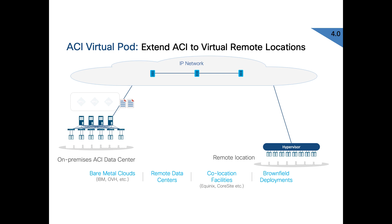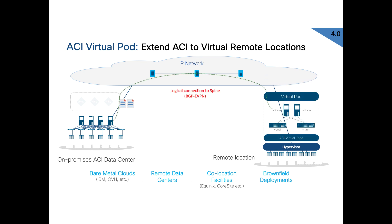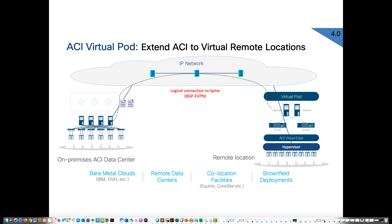The virtual pod is a new pod set up in the existing fabric. That virtual pod has control plane components — V-leaf and V-spine — and for the data plane we use the AVE. This means you need bare metal servers on the other side with an ESXi hypervisor, on top of which you install your virtual pod. A BGP EVPN session is established from the physical spine to the virtual pod spine. Once configured, you can manage all policies from a single pane of glass from the APIC, and the virtual pod looks like just one more pod in the fabric.